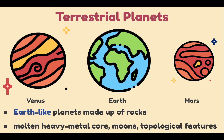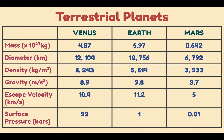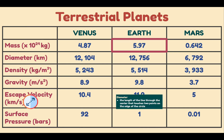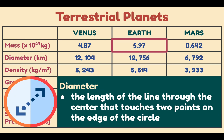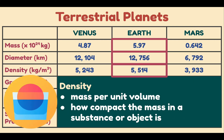Now I'm going to show you a table comparing these planets. Earth is the heaviest with 5.97 × 10²⁴ kilograms. In terms of diameter — the length of the line through the center that touches two points on the edge of the circle — Earth has the greatest diameter. Density is the mass per unit volume and is a measure of how compact the mass in a substance or object is. Earth has the greatest density.